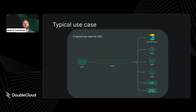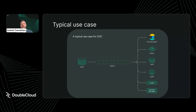A typical use case for change data capture is when you have a certified application with existing infrastructure — usually some sort of transactional database. This transactional database can be streamed into Kafka, used as a queue. From this queue we can analyze events from our transactional database with a different application — either an analytical database, maybe just code, or maybe another team. The queue acts as an interface to your database.